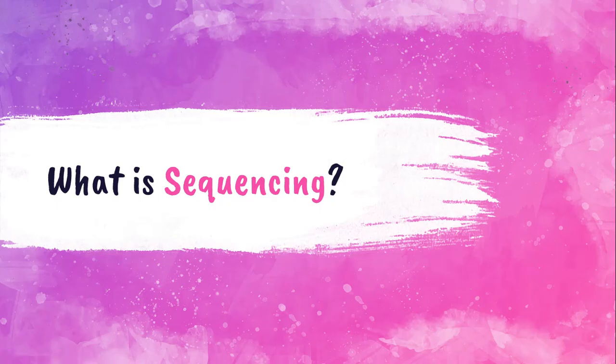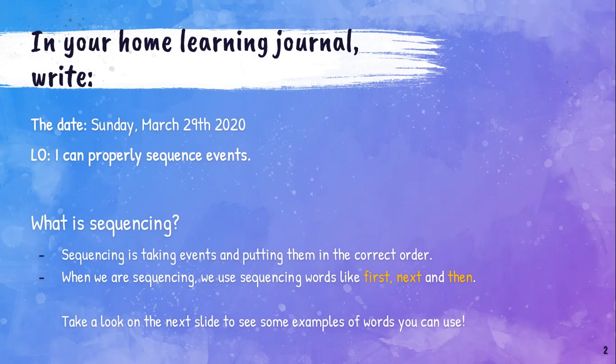Welcome to week two. This week in English, we are talking about sequencing, so we're going to learn what it is. In your home learning journal, you need to write the date, which is Sunday, March 29, 2020, and your LO, which is: I can properly sequence events.